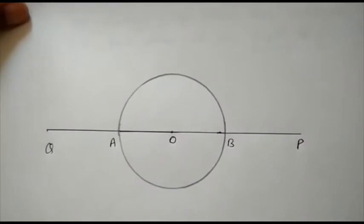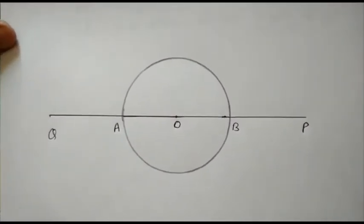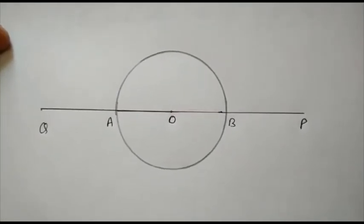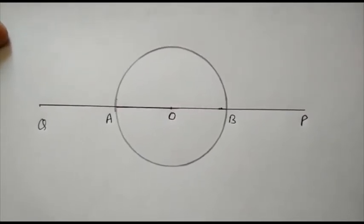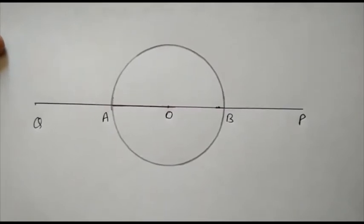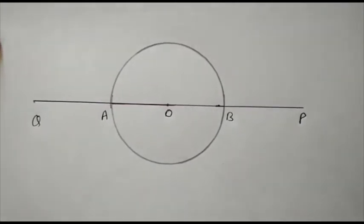So here in this figure, I have a circle whose center is O and radius 3 cm. AB is the diameter of the circle 6 cm and P is a point on its extended diameter such that OP is 7 cm. Similarly, Q is another point on its extended diameter such that OQ is 7 cm.